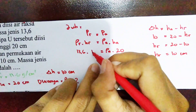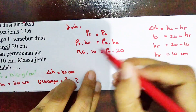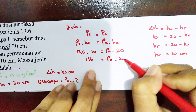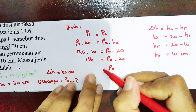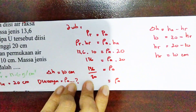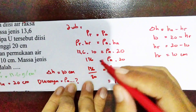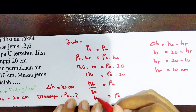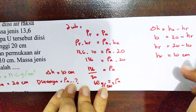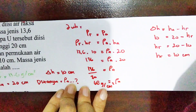Kita masukkan ke persamaan: 13,6 × 10 = ρ_A × 20. Maka 136 = ρ_A × 20, sehingga ρ_A = 136 ÷ 20 = 6,8 gram per cm pangkat 3. Tinggal kita bagikan seperti biasa. Saya kira cukup mudah.